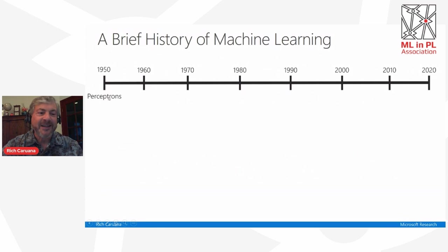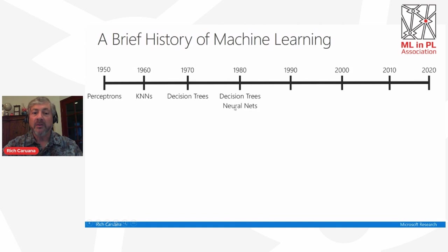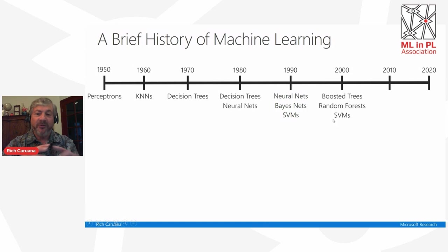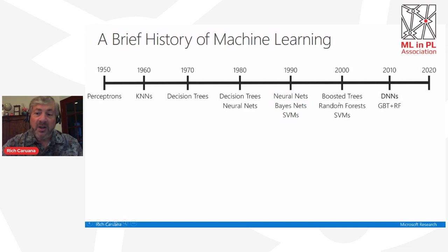Let me start with a fun history of machine learning. Back in the 50s, perceptrons were very popular — single-layer perceptrons. Then K-Nearest Neighbor was popular in the 60s. Decision trees came on the scene in the 70s and were still popular in the 80s, but we started to see the second coming of neural nets in the late 80s. Neural nets became pretty popular in the 90s, but we also started to see more principled methods like Bayes nets and support vector machines. By around 2000, some people actually thought support vector machines was the final chapter of supervised learning. By 2010, we saw deep neural nets, which is perhaps the most exciting change I've seen in machine learning over my career.